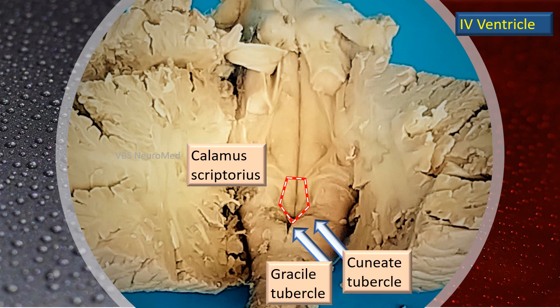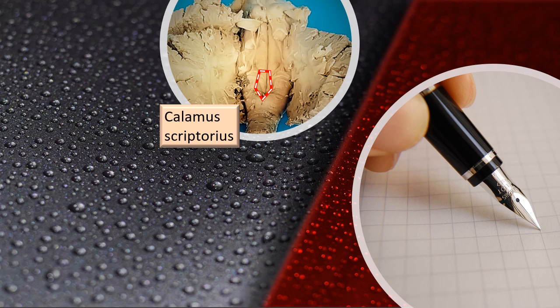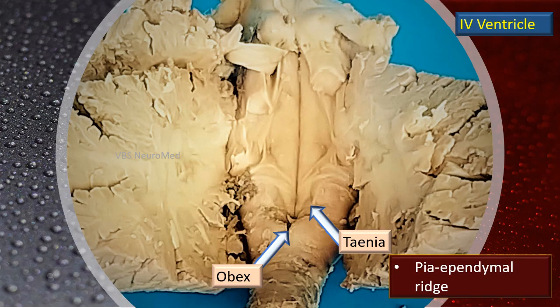There is an area marked with a red-white dotted line that looks like the nib of a pen — we call this the calamus scriptorius. It is just an area of reference and we do not attribute major functional importance to it. The lower tip of the calamus scriptorius is the obex. The obex is the junction where the fourth ventricle cavity ends and the central canal of the spinal cord begins. The tenia is a paired ependymal ridge that runs laterally up to the foramen of Luschka.